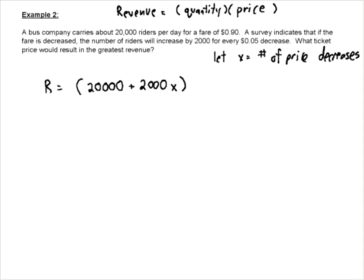Now let's look at the price. The price, well, our original price was 90 cents, and every time we minus 5 cents, every 5 cent price decrease is going to result in an increase of ridership. And that's the new price.